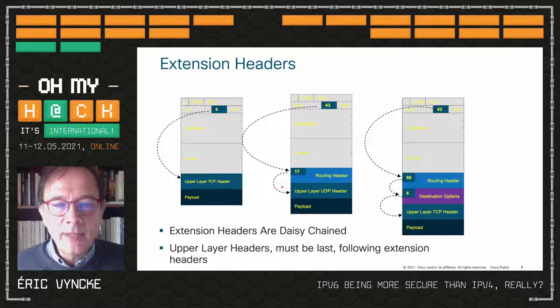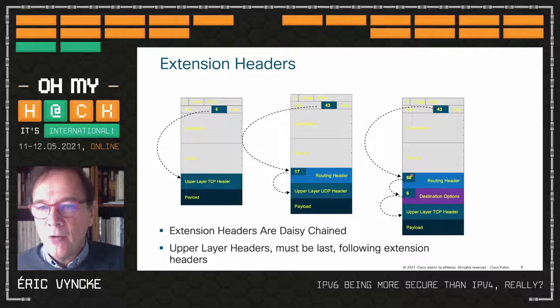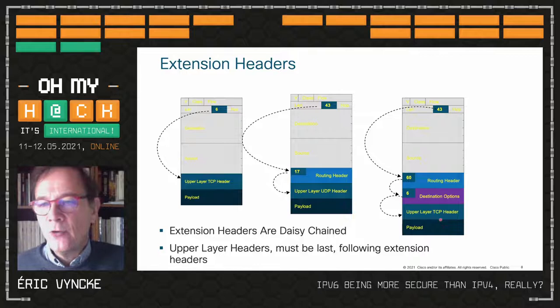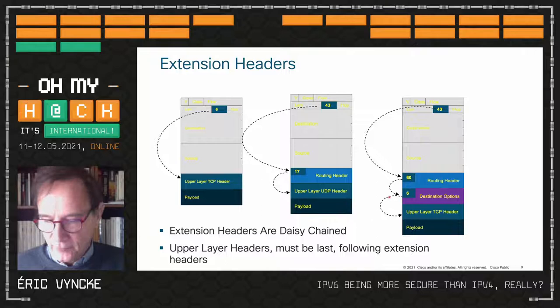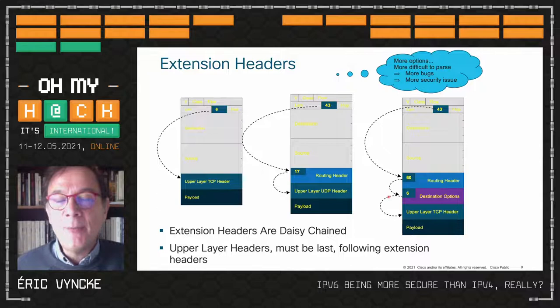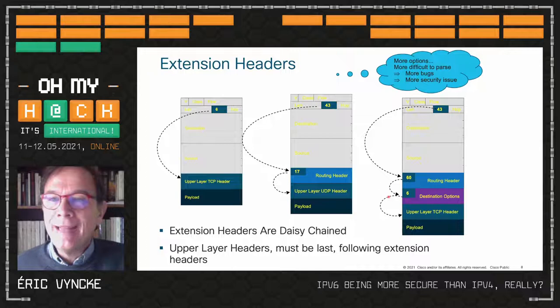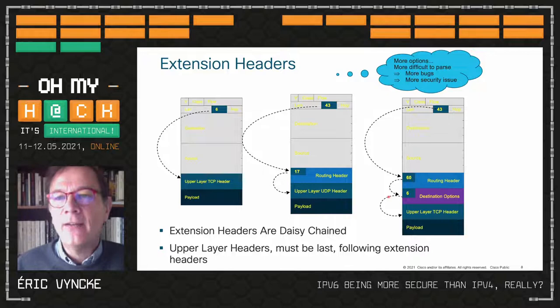You can chain multiple extension headers: a routing header (43) pointing to a destination options header (60), and so on. You can have a very long extension header chain, and each extension header has its own length field so we know where to go next. Very recently, for instance, there was Segment Routing for IPv6, where you can send forwarding or routing instructions inside the packets so the packet itself decides what kind of processing and path it wants.